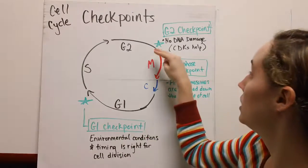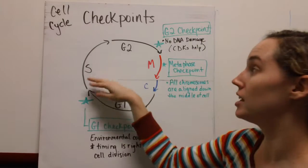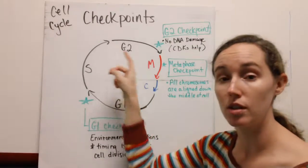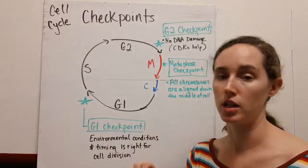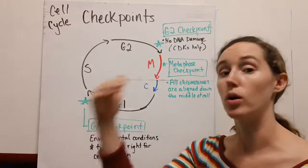The G2 checkpoint makes sure that the DNA is not damaged. If everything from the synthesis section is all good and ready to go, then once that checkpoint is passed, you move into mitosis.